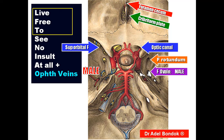The two nerves passing through foramen ovale are the mandibular nerve and the lesser petrosal nerve. Foramen spinosum transmits the middle meningeal artery and the nervous spinosus from the mandibular nerve, which supplies the dura of the middle cranial fossa.